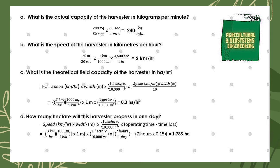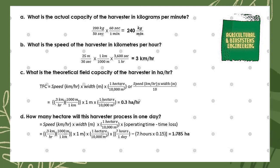First, we solve for the actual capacity of the harvester in kilograms per minute. We simply convert seconds into minutes using the conversion factor: 60 seconds equals one minute. We have 200 kilograms over 50 seconds multiplied by 60 seconds over one minute, giving a final answer of 240 kilograms per minute.